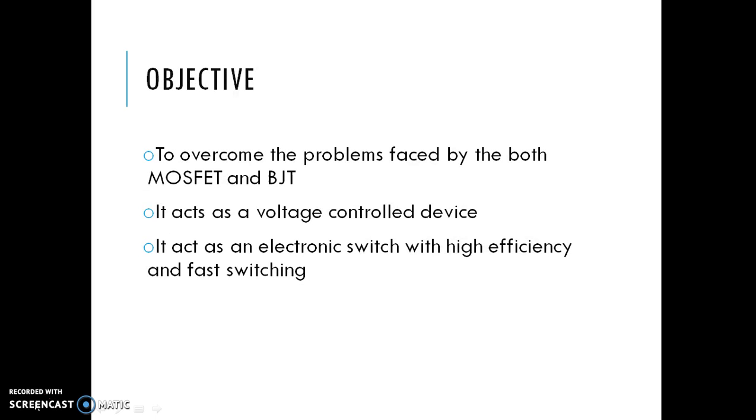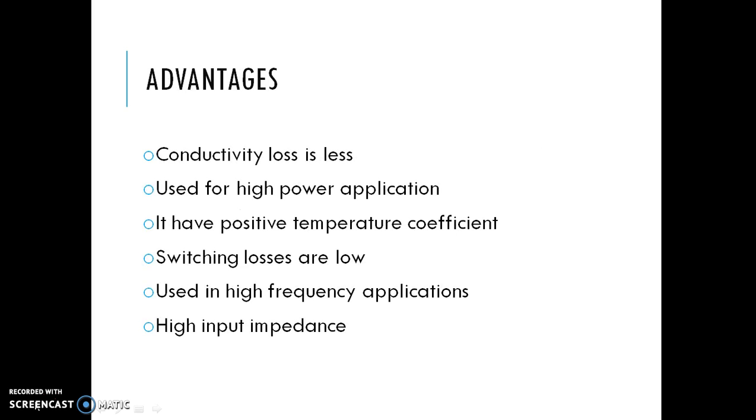The objective of IGBT is to overcome the problems faced by both MOSFET and BJT, and it also acts as a voltage controlled device. It acts as an electronic switch with high efficiency and fast switching. The advantages of IGBT are: conduction loss is less and useful for high power applications, it has positive temperature coefficient, switching losses are low, useful in high frequency applications, and high input impedance.